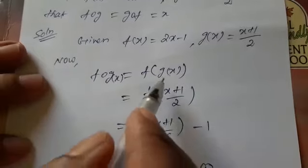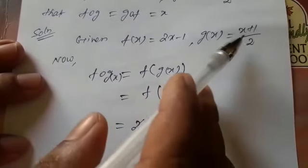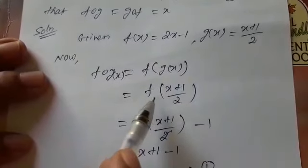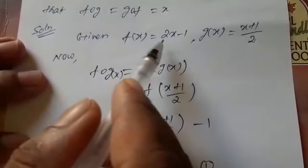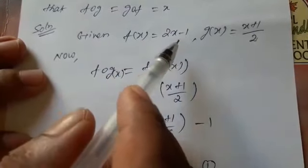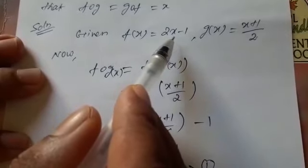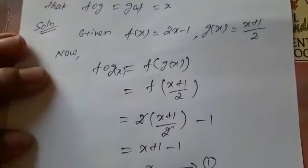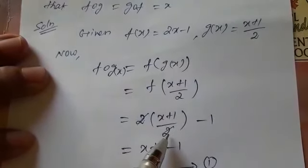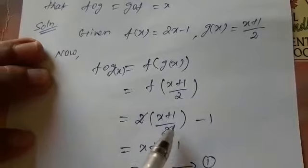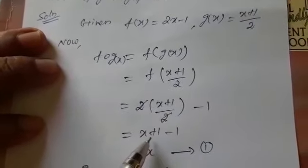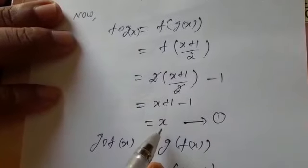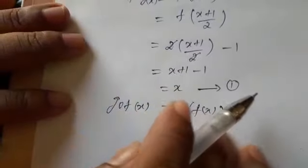f∘g(x) = f(g(x)). Substitute g(x) = (x+1)/2 into f. The condition for f(x) is 2x − 1, so replace x with (x+1)/2: 2 × (x+1)/2 − 1. The 2s cancel, giving x + 1 − 1. Plus 1 and minus 1 cancel, so the answer is x.